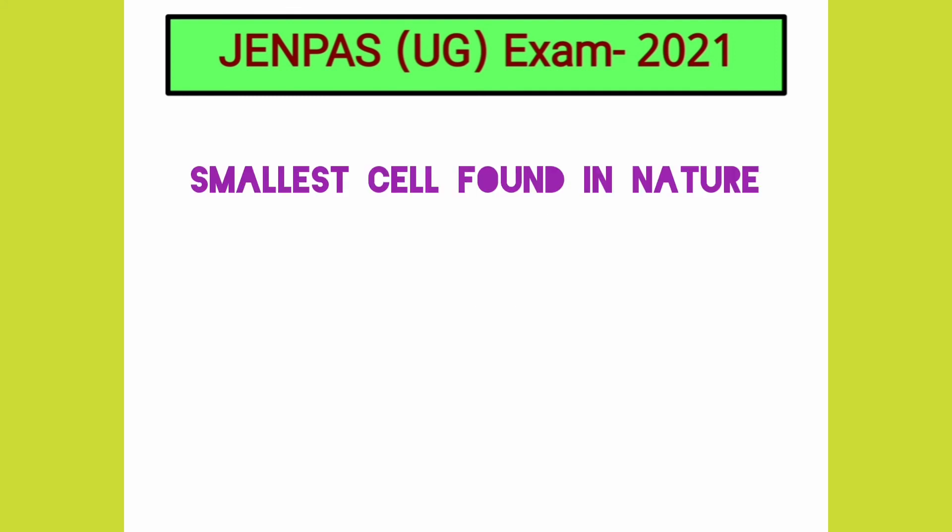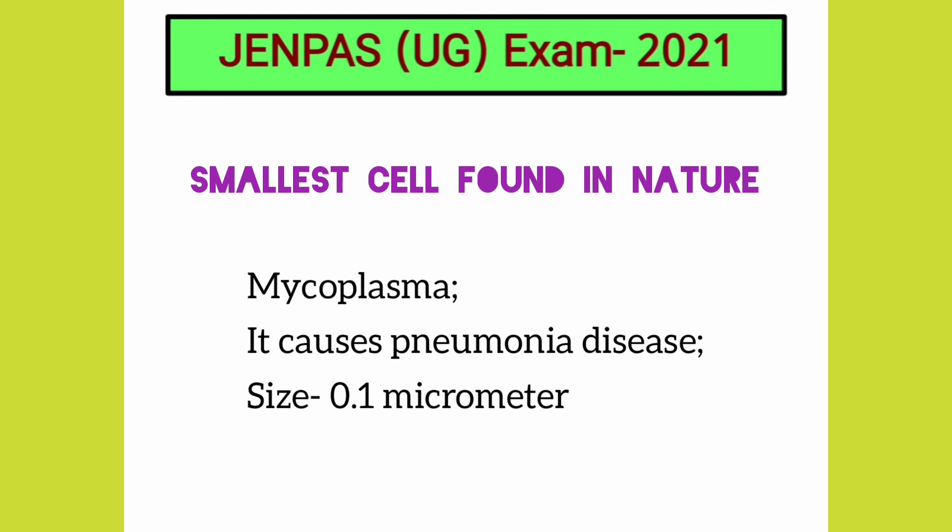What is the smallest cell in nature? Mycoplasma is the smallest cell in nature. It causes pneumonia disease, and its size is about 0.1 micrometers.